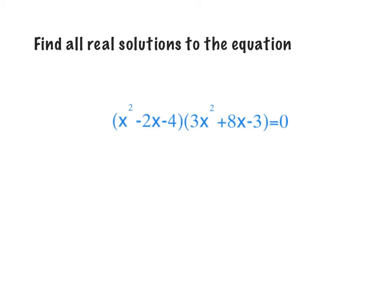Find all real solutions to the equation. I'll always start with factoring. Multiply to 4, add to 2: I can use 2 and 2, or 1 and 4 — none of those add to 2, so I can't factor that one. Because the a value is 1, I like to complete the square — you can choose whatever method you want and we should still get the same answer.